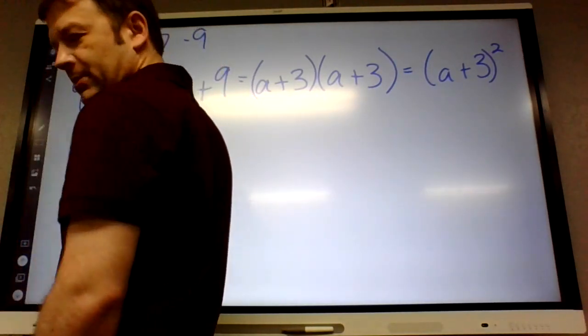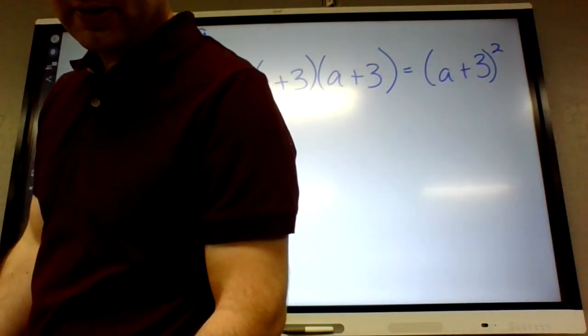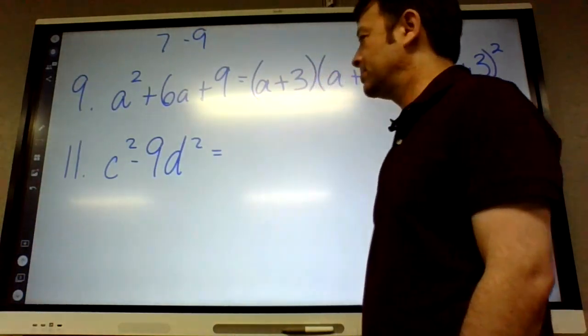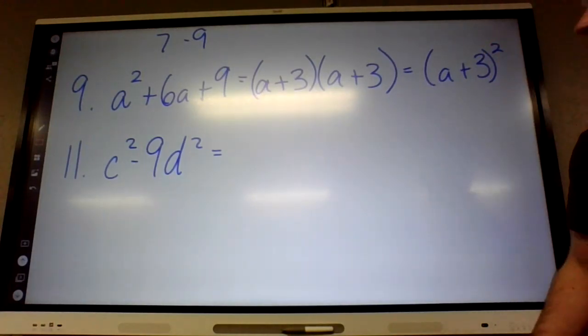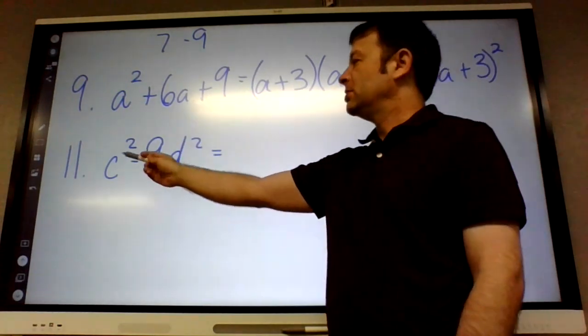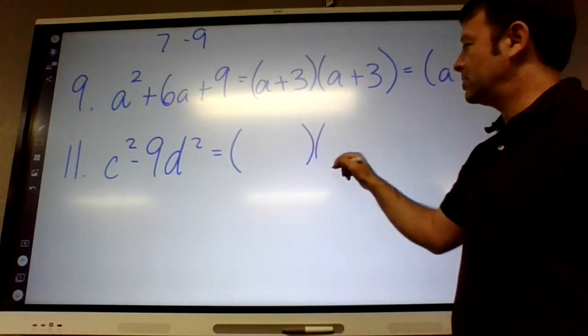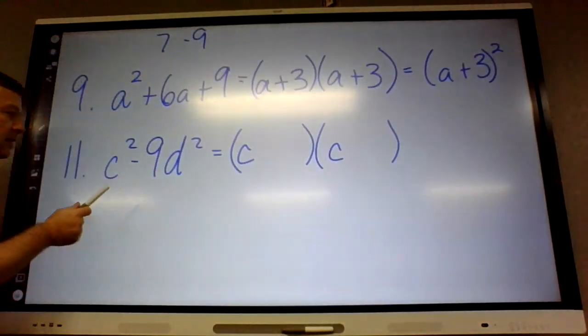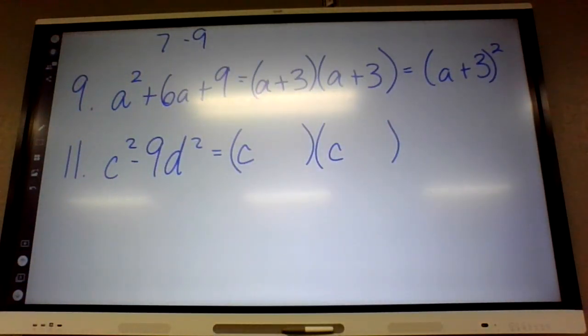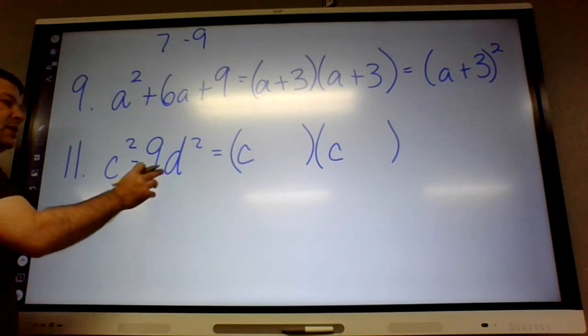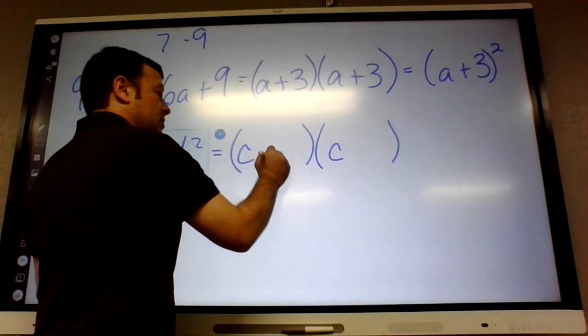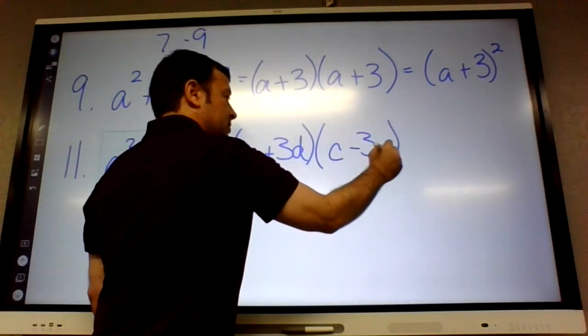This looks like one we've done already. Caleb, can I take anything out of this? No. Is it a square minus a square? Yes. Because that is something squared, and that is something squared. So what's going to go in the front? C. And what's going to go in the back? What times what equals negative nine? Three. Three and negative three. And then what times what equals D squared? D. So that will be plus 3D and minus 3D.